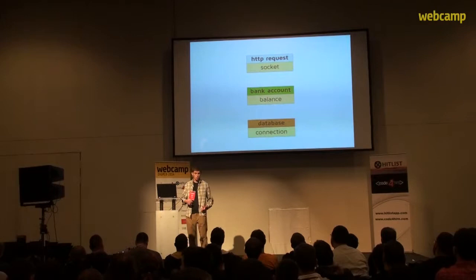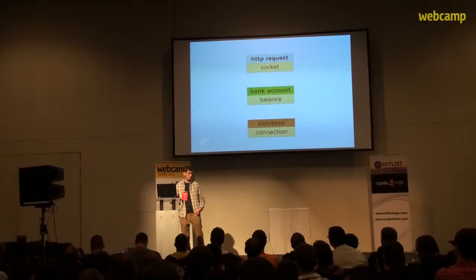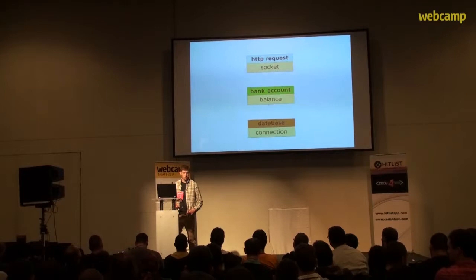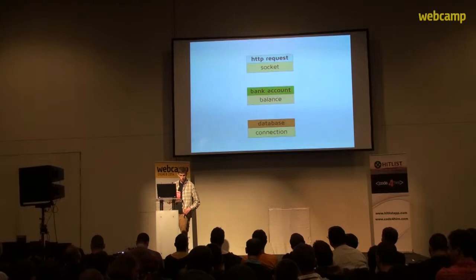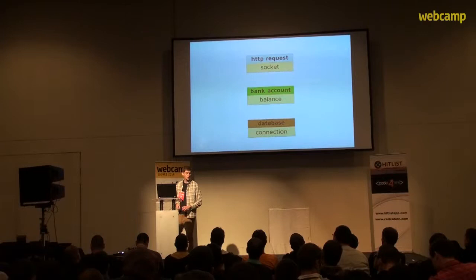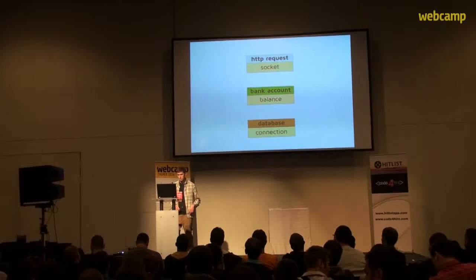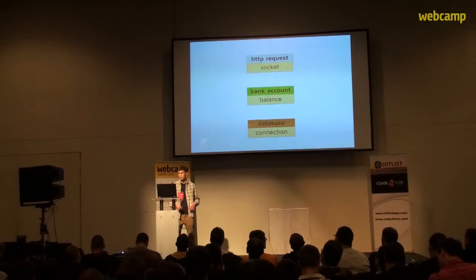An actor is a concurrent computation entity — which is a fancy way of saying it is a thing that runs code concurrently to all other actors. Two actors run concurrently and they may run in parallel. Each actor possesses some piece of knowledge about the state — some piece of the puzzle — and we call this an actor's state, which is internal and private to each actor, and no other actor may directly access or manipulate. In this sense, actors are fully isolated, independent, they live their own separate lives, and they are kind of like components that just happen to live inside the same operating system process.